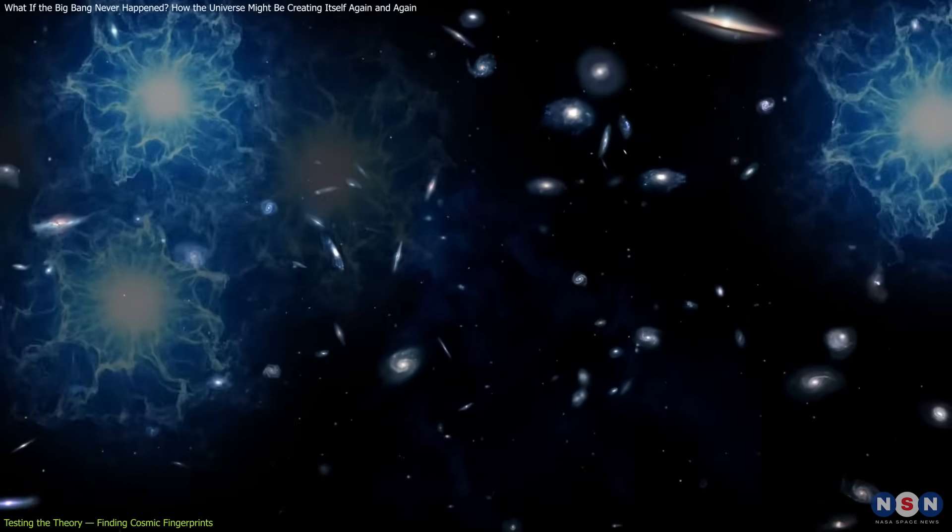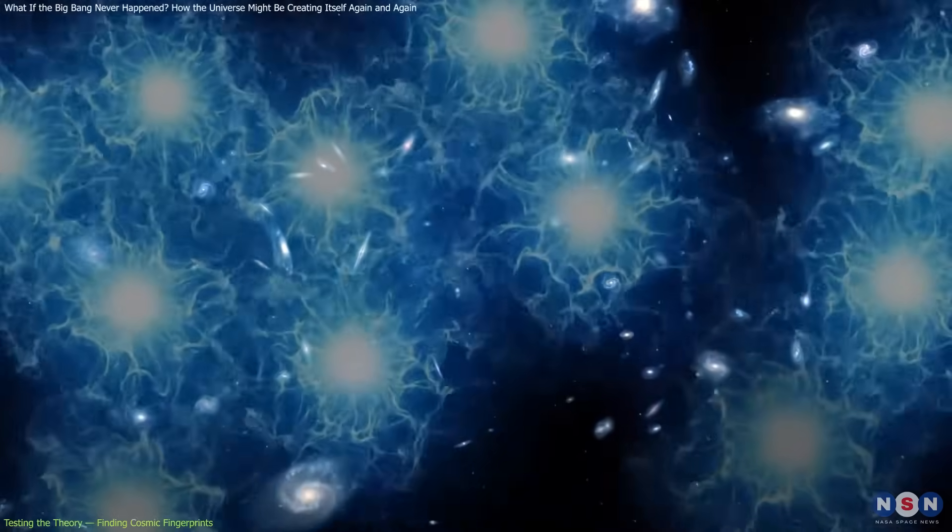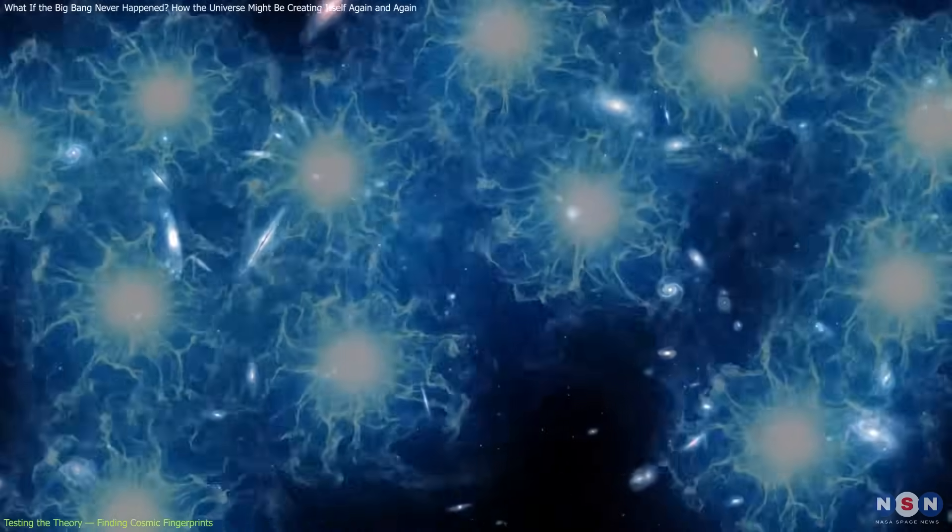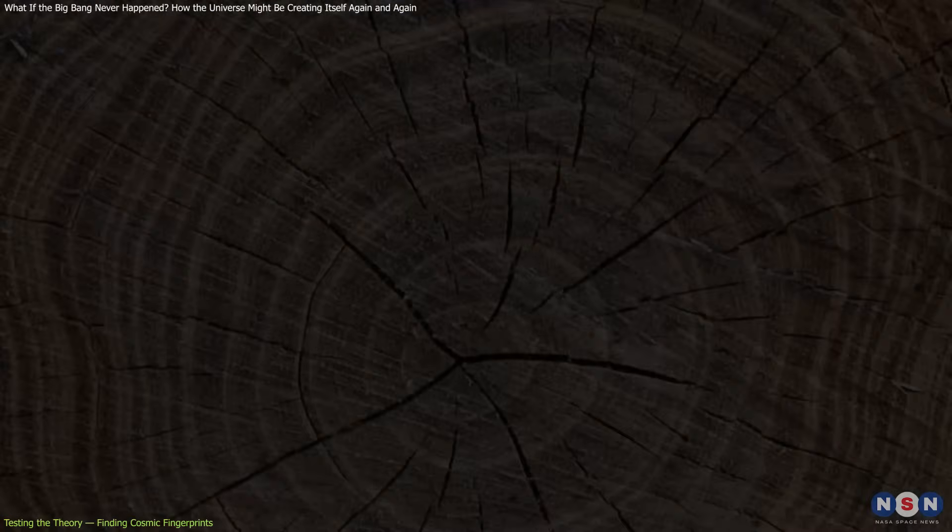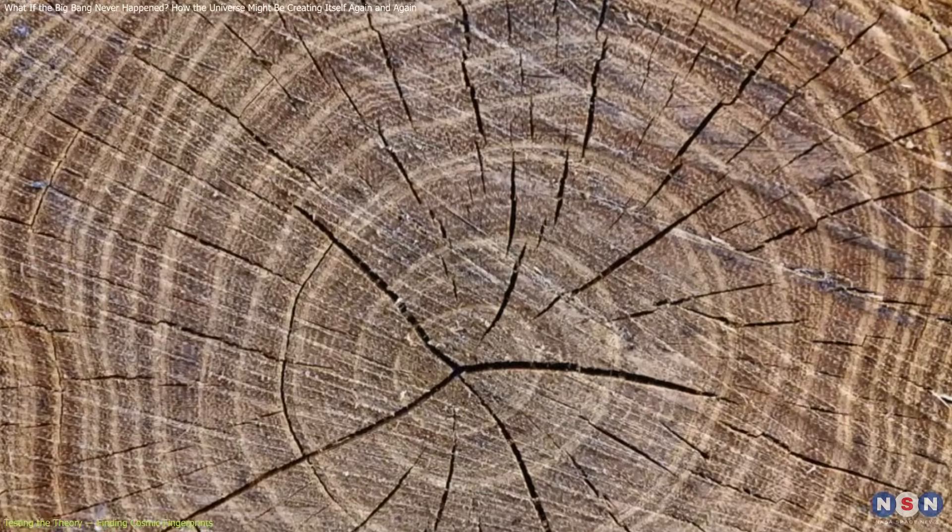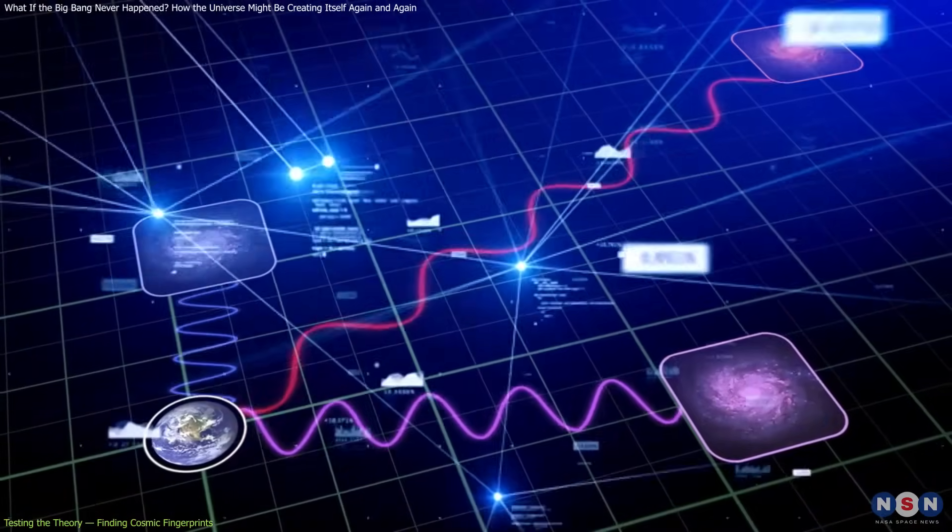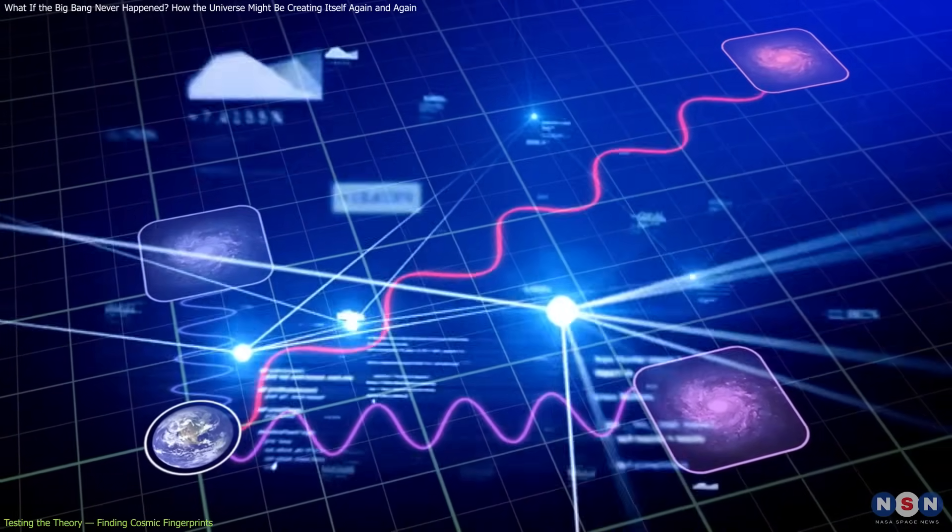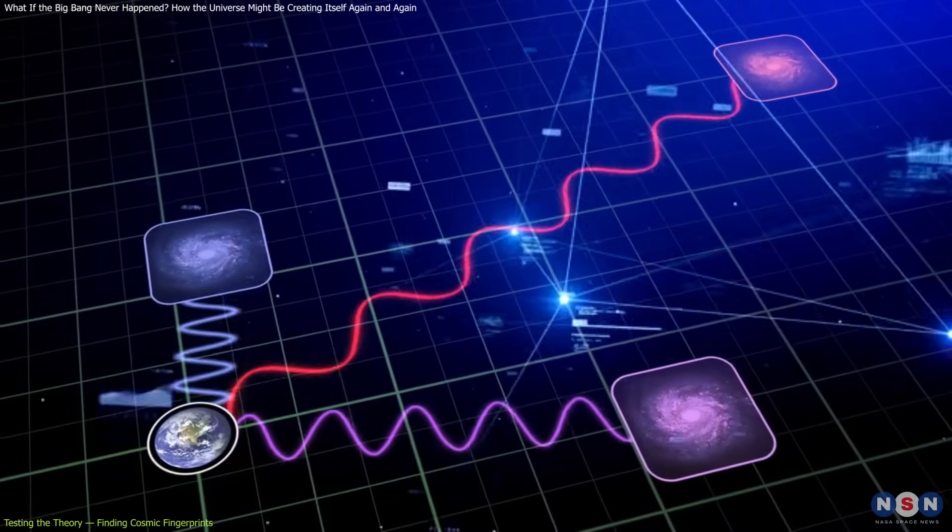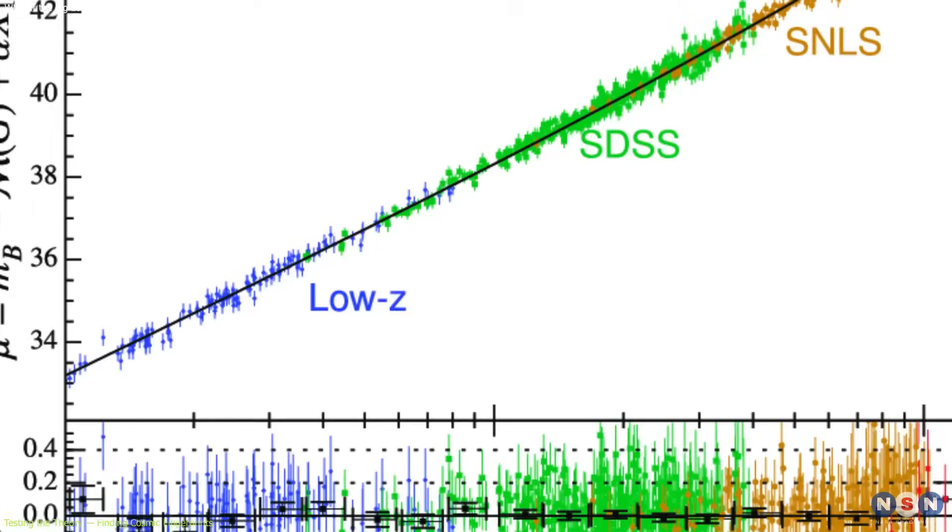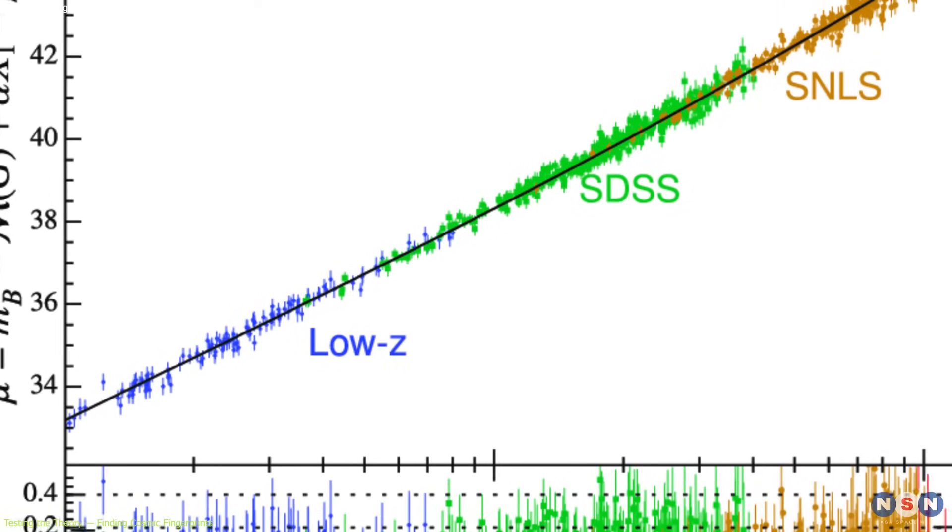But if expansion occurs in pulses, this plot might contain small, sharp deviations. These irregularities could mark past singularities, like tree rings showing periods of rapid growth. To spot them, astronomers would need to examine red-shift data with greater resolution than before, searching not for a gradual curve, but for steps in the graph.